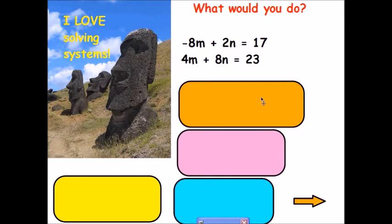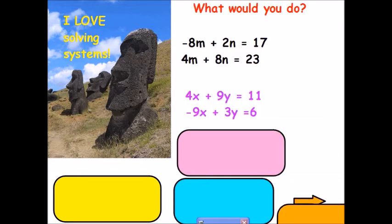Next problem. Let's see a few ways of doing this. But to me, it looks like it might be pretty easy to get rid of the y's just by multiplying the bottom equation by a negative 3. That way, my negative 9y will cancel out with my positive 9y.